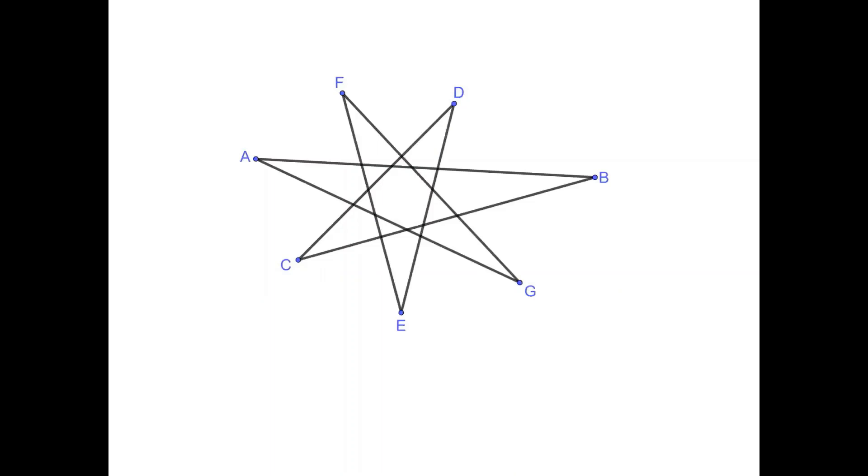Now, we have seven angles A, B, C, D, E, F, and G. First, look at the triangle containing angles A and B. Its exterior angle 1 equals the sum of remote angles A and B.